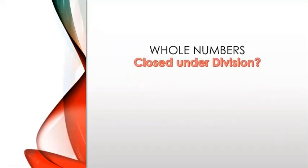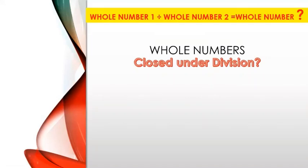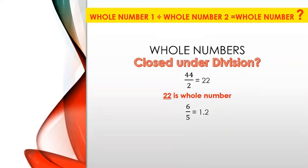Are whole numbers closed under division? We will find out if dividing two whole numbers always gives a whole number. If we divide 44 by 2, we get 22, and 22 is a whole number. But if we divide 6 by 5, what do we get?